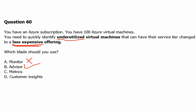Option C is Azure Monitor Metrics, a feature of Azure Monitor that collects numeric data from monitored resources into a time-series database. It is only collecting data and not providing any advice, so it is not the correct answer. Option D is Azure Customer Insights, which enables organizations to bring together diverse data sets and generate insights for a holistic 360-degree view of their customers — a data management tool, not an advisory service, so it is also incorrect.